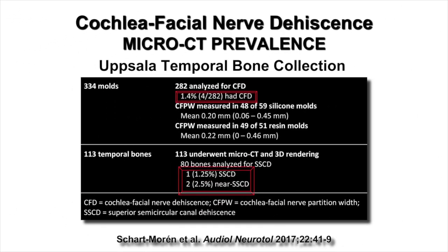A micro-CT prevalence study of cochlea facial nerve dehiscence in the Uppsala temporal bone collection used 334 molds, studying 282 for cochlea facial nerve dehiscence. Four out of 282 had the condition, representing 1.4% of the study population. Importantly, these patients did not have clinical symptoms of third window syndrome.